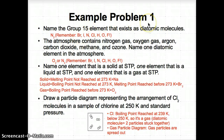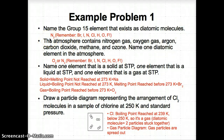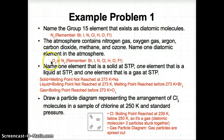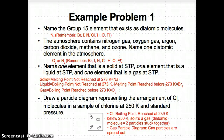Let's try example problem one. For question one, we need to name the group 15 element that exists as diatomic molecules — the only one is N₂, because if you remember, Brinkelhoff has N in it. For the second part, the only two diatomic molecules among the choices are O₂ and N₂, since oxygen and nitrogen are included in the Brinkelhoff list. They exist as diatomic molecules because 'di' stands for two.